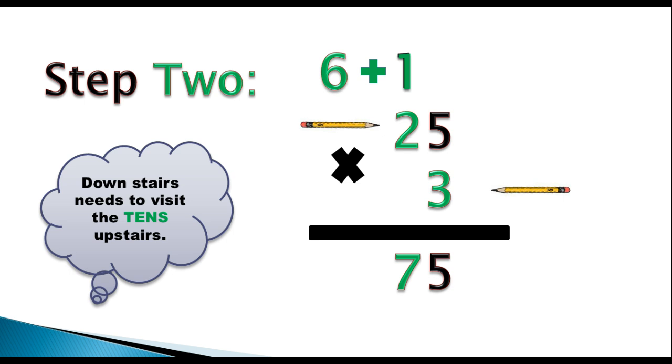Now that number goes in the answer box down here. And, as you can see, we have the whole product now. The downstairs number has visited everybody upstairs. So we have our final product, and our final product, the final answer is 75.